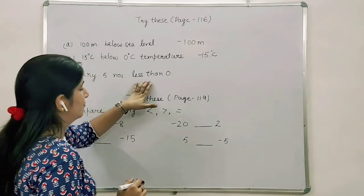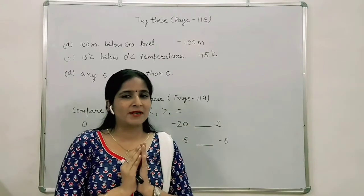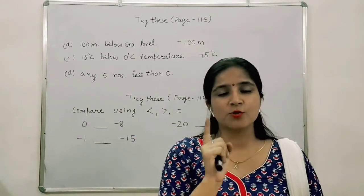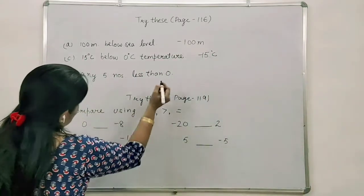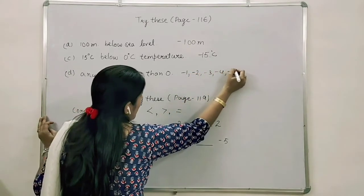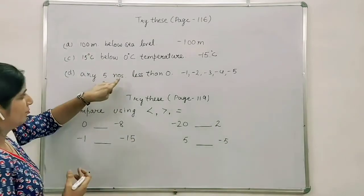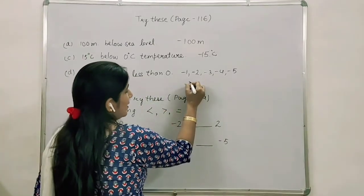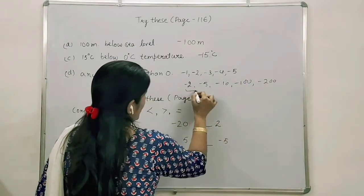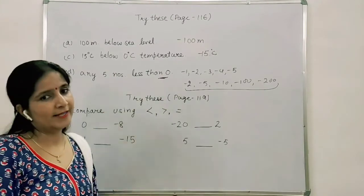The next part is: write any 5 numbers less than 0. Less than 0 — numbers below 0 are always towards the left side on the number line, and towards the left the numbers are always negative. So we can write minus 1, minus 2, minus 3, minus 4, minus 5. You can also write other numbers like minus 2, minus 5, minus 10, minus 100. It is not saying you need to write continuously — the condition is they should be less than 0. All negative numbers are less than 0.